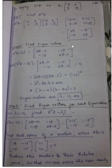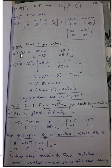Step two is to find the eigenvalues. To find the eigenvalues, we have been doing this in the previous problems as well — in PCA and LDA. To find the eigenvalues, you need a characteristic equation.